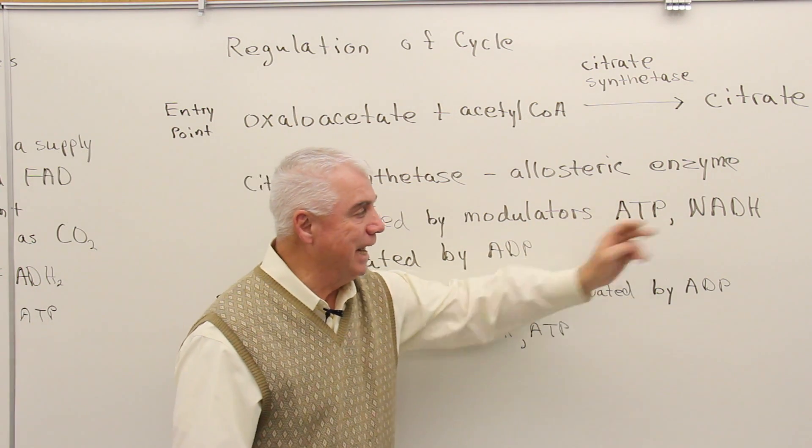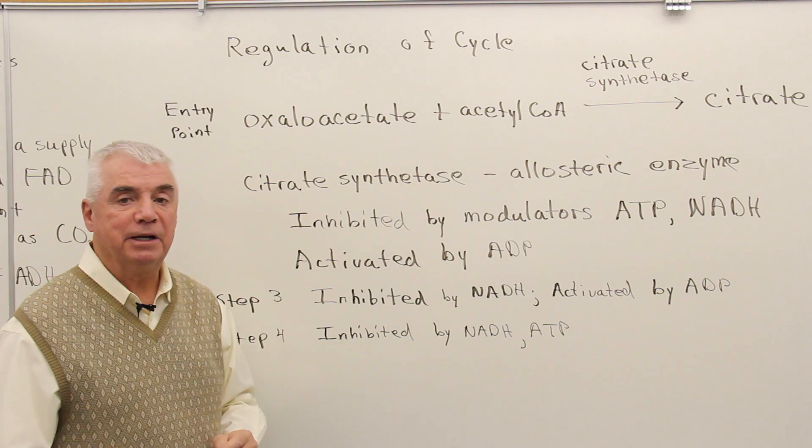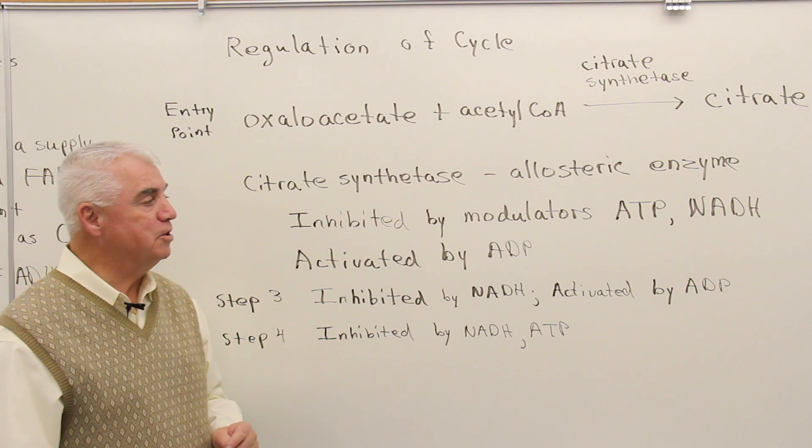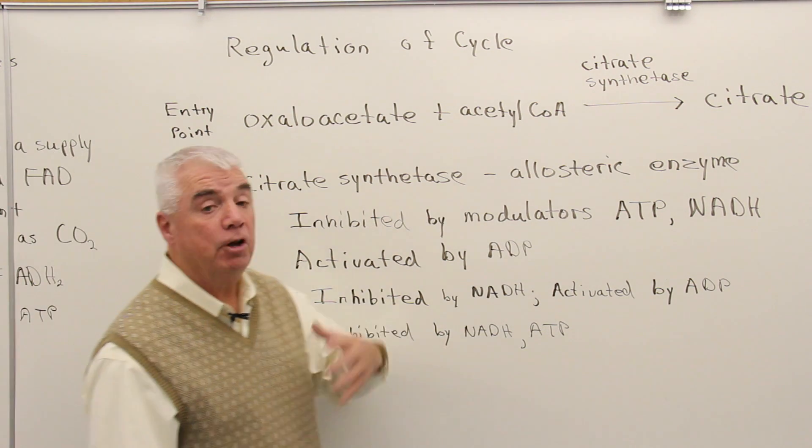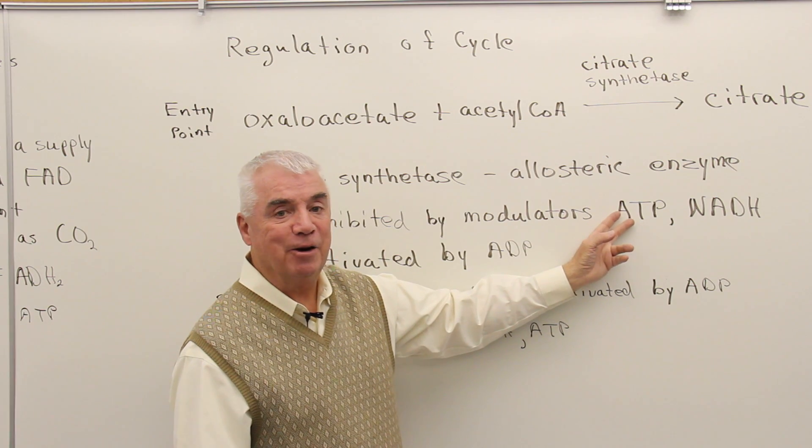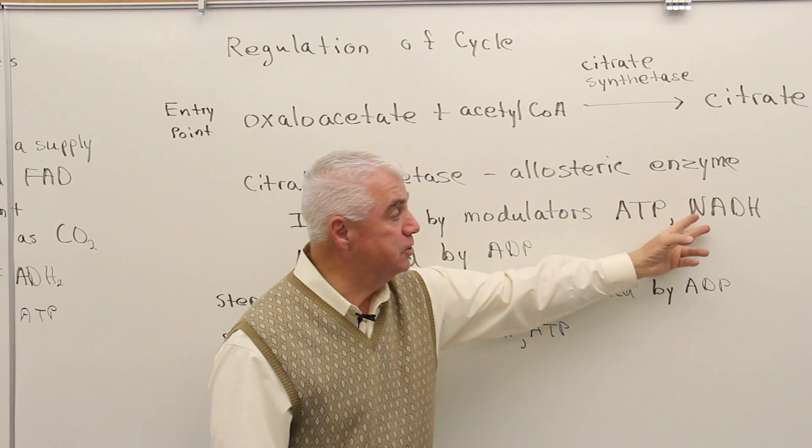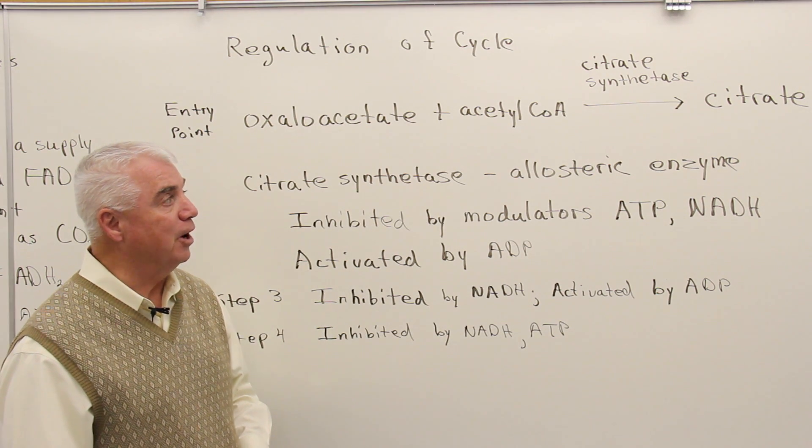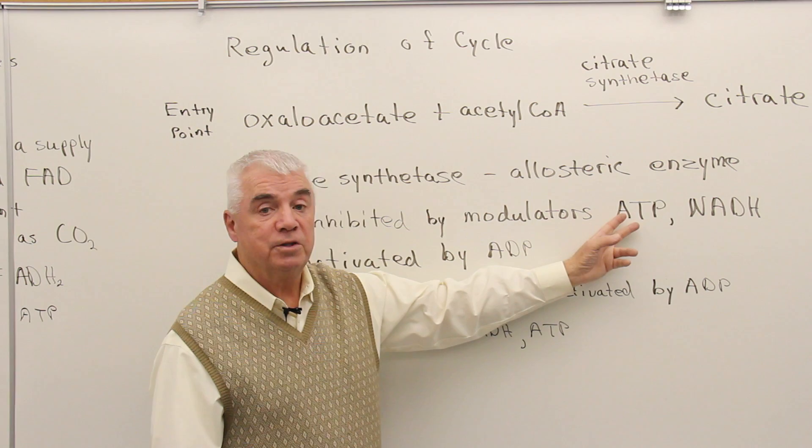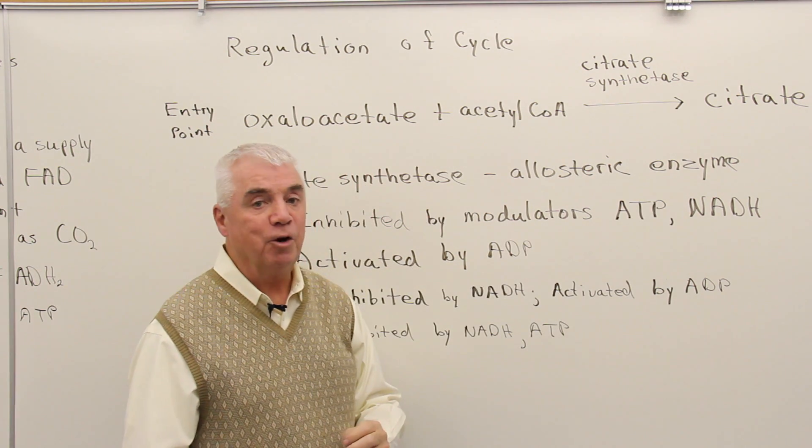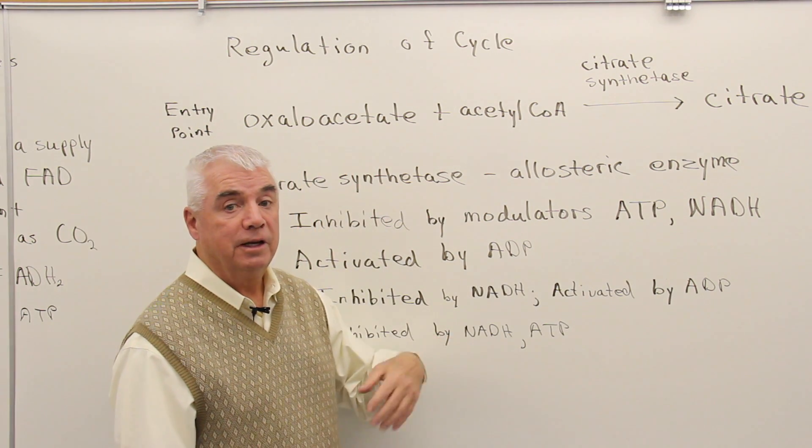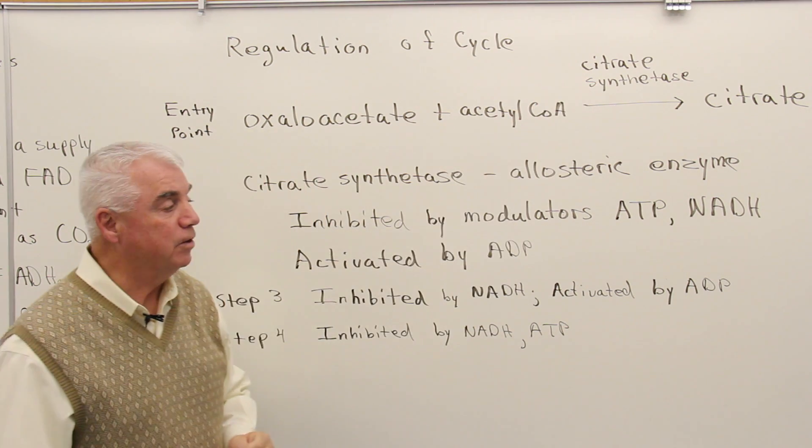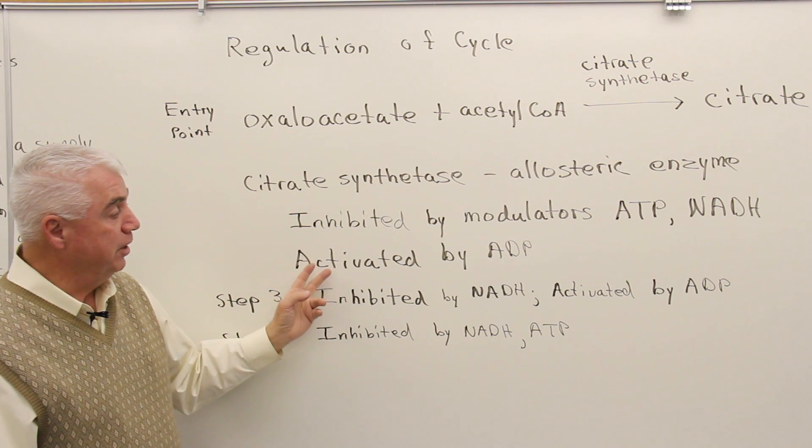ATP and NADH both inhibit citrate synthetase. What's the meaning of that? If we have lots of energy, our supplies of ATP are high, and these hydrogen transporters are high, carrying hydrogen atoms to the electron transport chain. If these supplies are high, we don't need energy production to be maximum, so they slow down citrate synthetase.